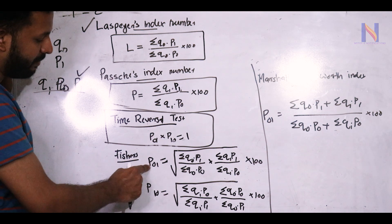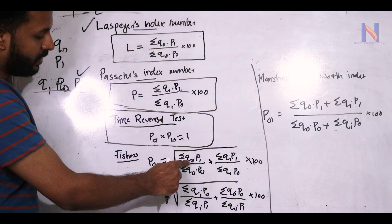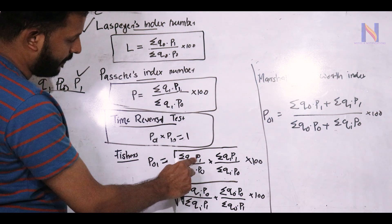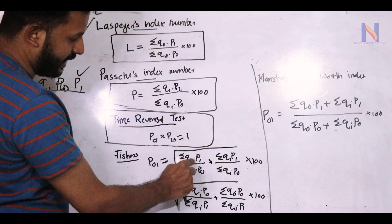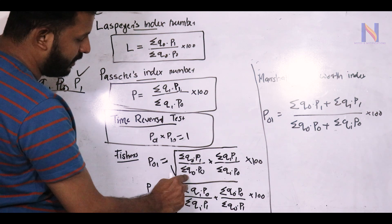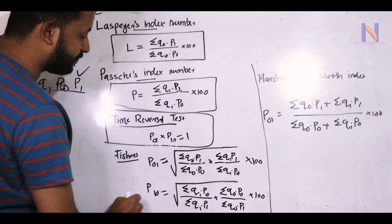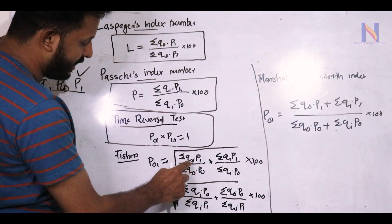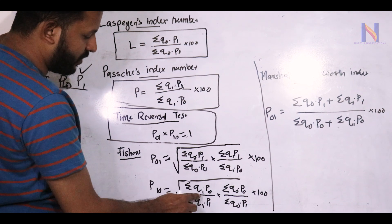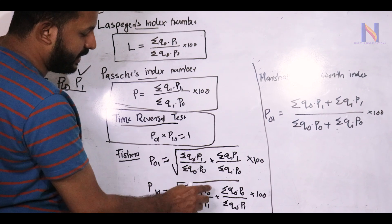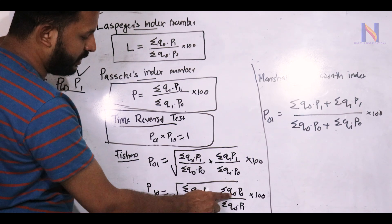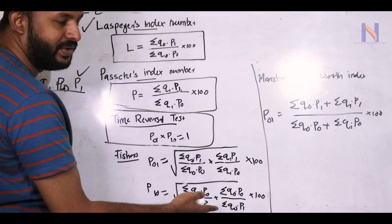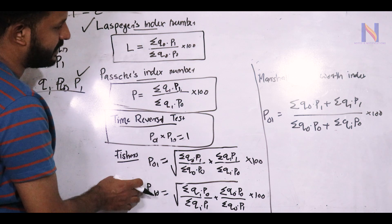For the time reversal test, in the formula swap Q0 with Q1 and P1 with P0. So Q0 becomes Q1, P1 becomes P0, Q1 becomes Q0, and P0 becomes P1. Multiply the two index values together to verify the time reversal property.